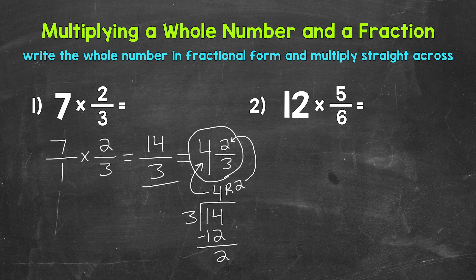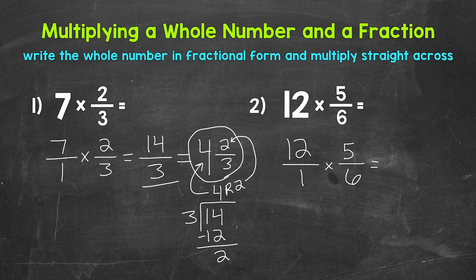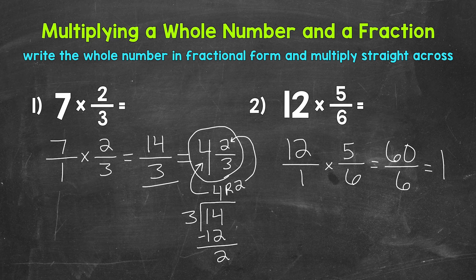Let's move on to number 2, where we have 12 times 5 sixths. Let's rewrite 12 in fractional form by putting it over 1, giving us 12 over 1 times 5 sixths. Now we can multiply straight across. 12 times 5 is 60, and 1 times 6 is 6. So we get 60 sixths. Let's convert that to a mixed number: 60 divided by 6 is 10 exactly — no remainder. So our answer is the whole number 10.